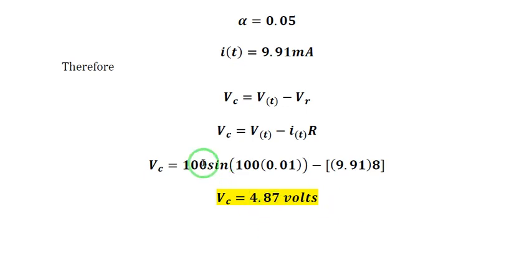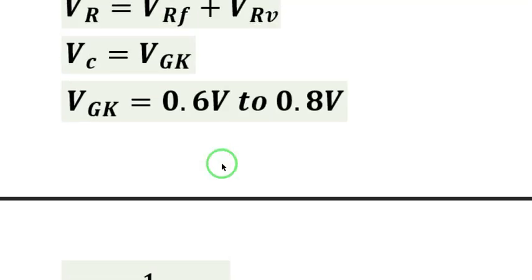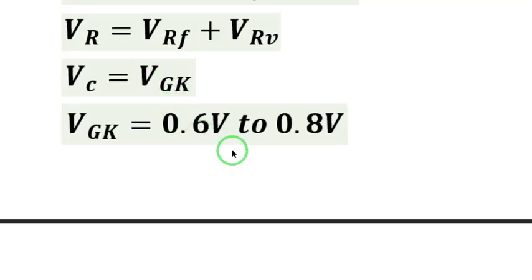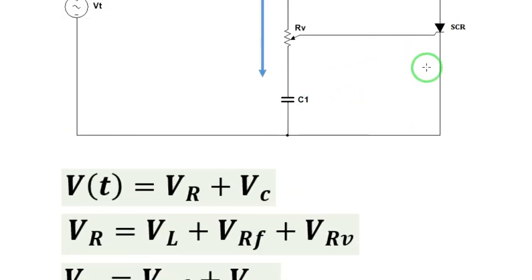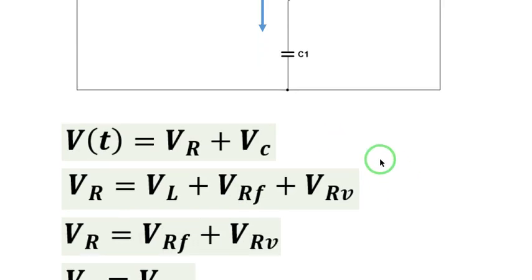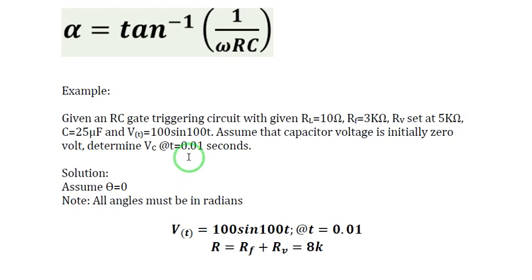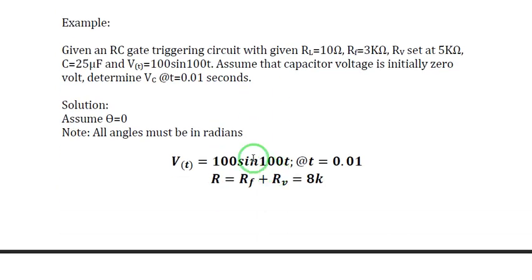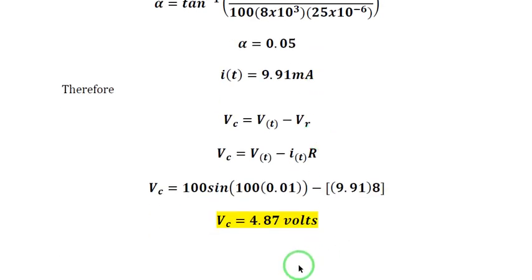Obviously, 4.87 volts is much larger than the value of VGK, which is the only voltage required to trigger the SCR. Based on that comparison, we can clearly understand that 0.01 seconds is not the time needed to fire the SCR, because at 0.01 seconds, V sub C has already exceeded 0.6 to 0.8 volts.